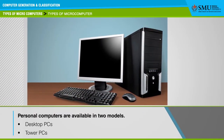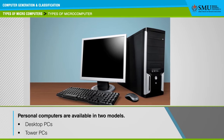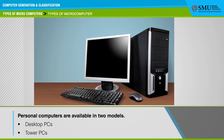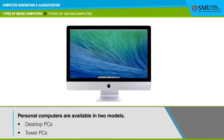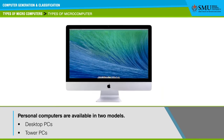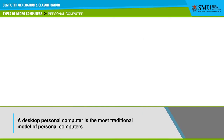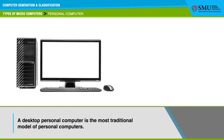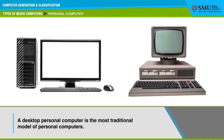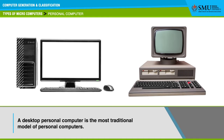The most popular types of personal computers are the PC and the Apple. The processor and operating systems are different for these two types of computers. PCs use the Windows operating system, while Apple computers use the Macintosh operating system. Personal computers are available in two models: Desktop PCs and Tower PCs. A desktop personal computer is the most traditional model, where the system unit CPU can lie flat on the desk or table.